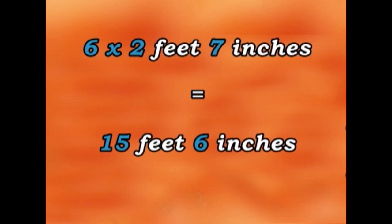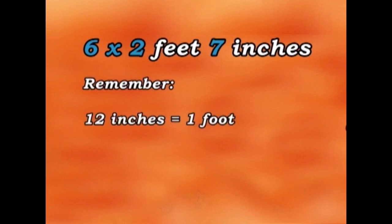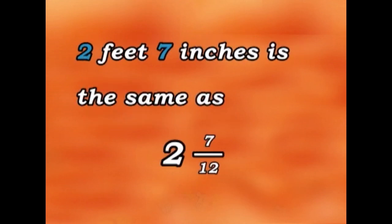Let's solve the problem another way. It's the same problem: six times two feet seven inches. Remember, twelve inches make a foot. So two feet seven inches is the same as two and seven twelfths.